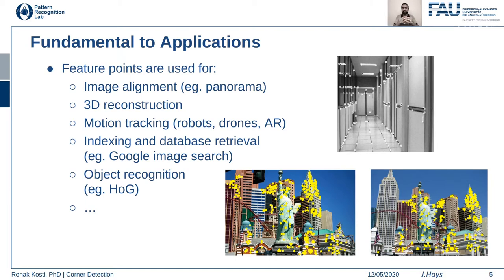The same applies to indexing and database retrieval — for example, in Google image search, redness of a flower is a feature property used for retrieval. Another example is object recognition, where you use a histogram of gradients or a collection of gradient features to recognize objects across different images.